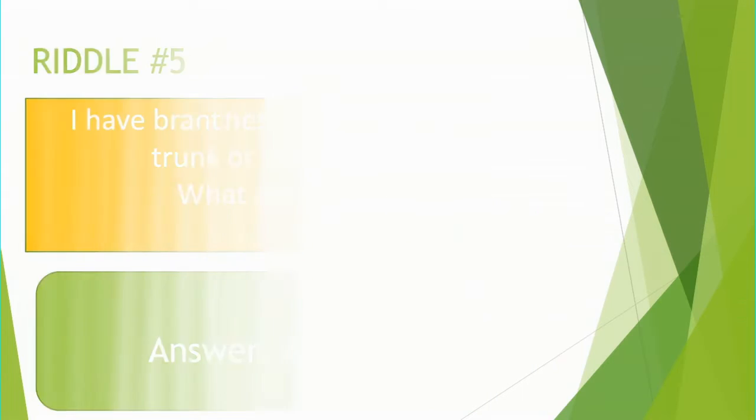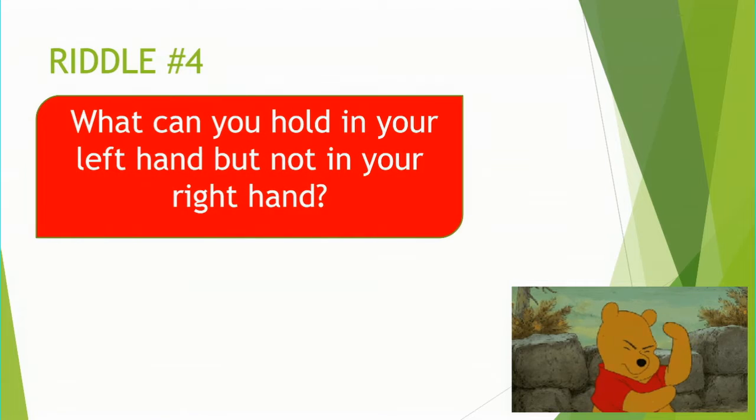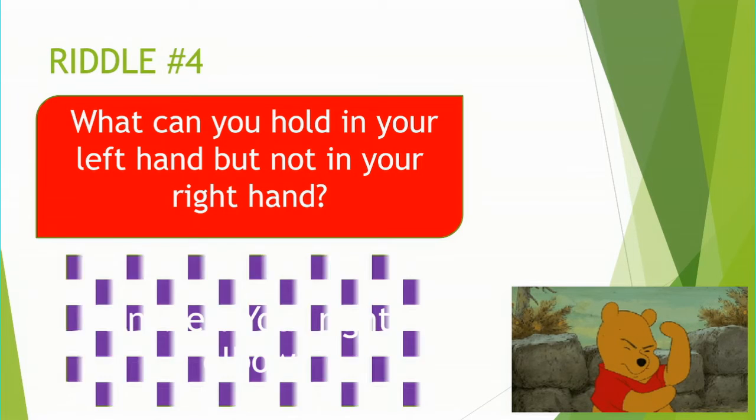Riddle number four: What can you hold in your left hand but not in your right hand? It's a tricky one, so be careful. Time's up! Answer: your right elbow.